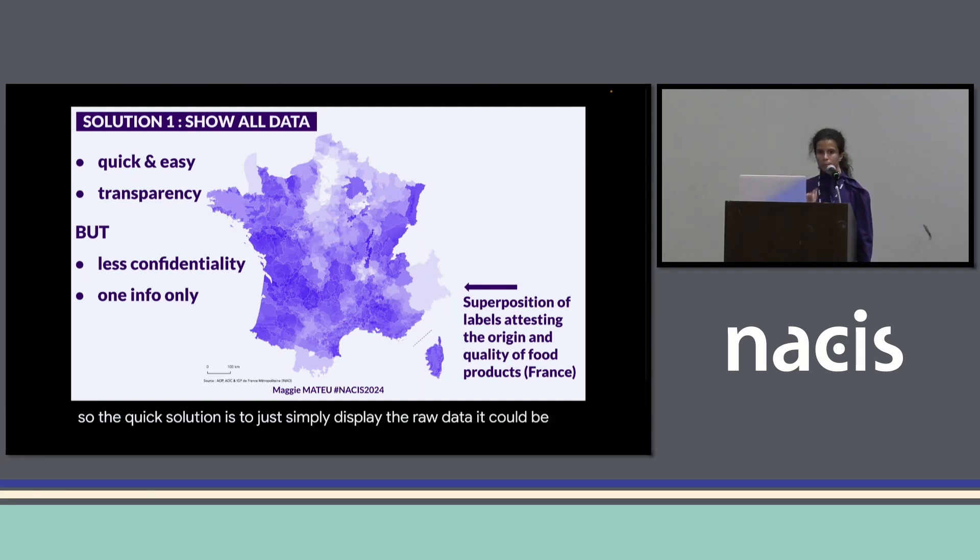The quick solution is to simply display the raw data. It could be points, lines, polygons, and display them with 10% opacity or even less. Therefore, when they superpose, they become more opaque. On this map, you can see in bright purple the areas where there's a lot of quality food products produced, and areas where there's almost none of them. But this kind of representation might be too complex and is not really giving a spatial analysis of the phenomenon.